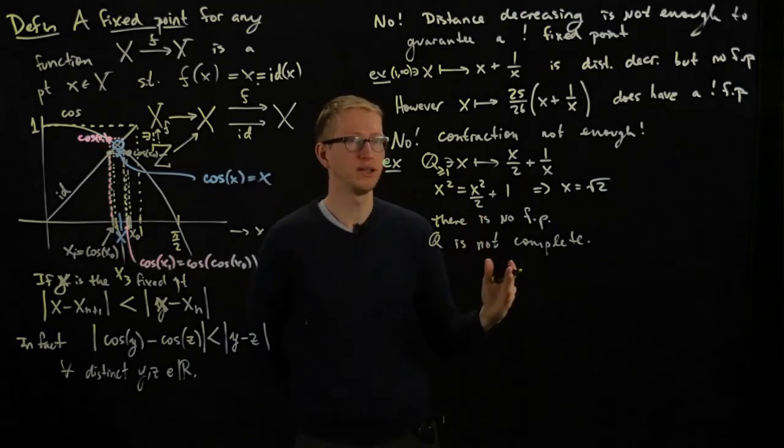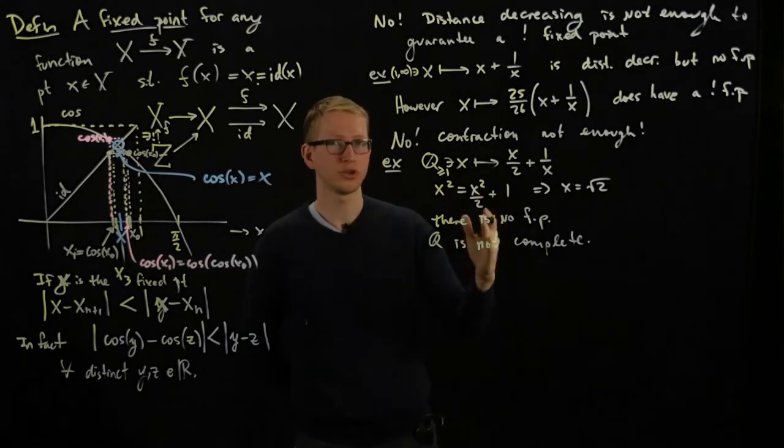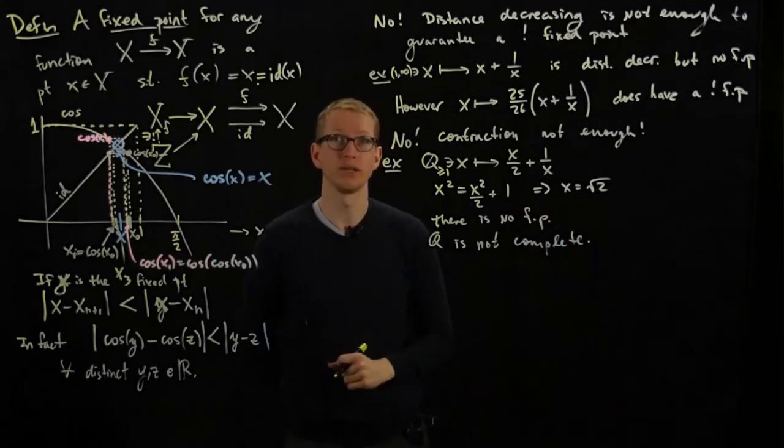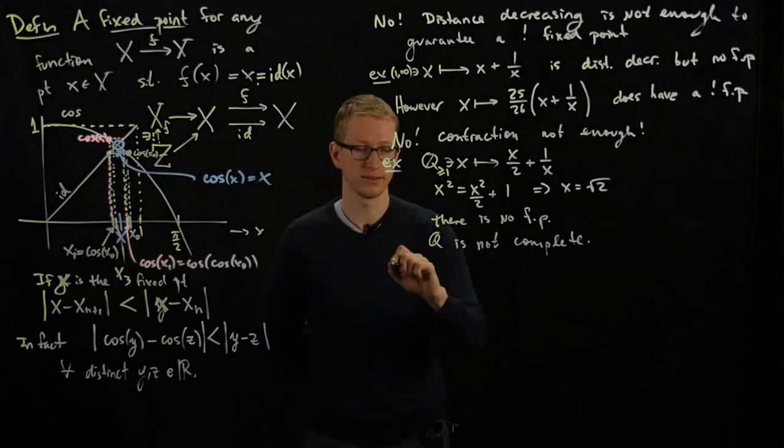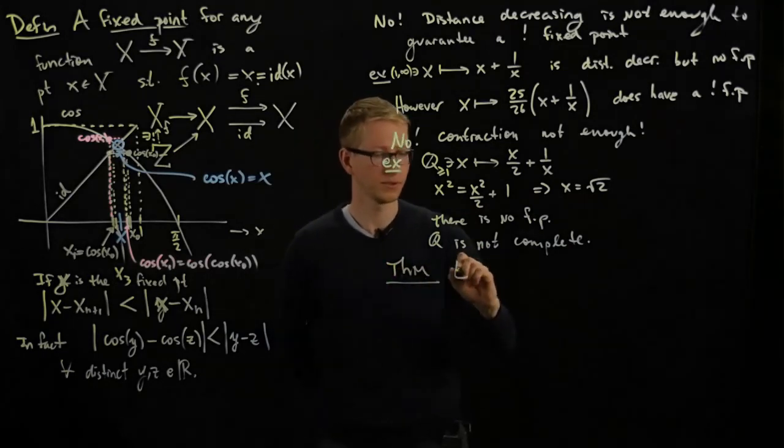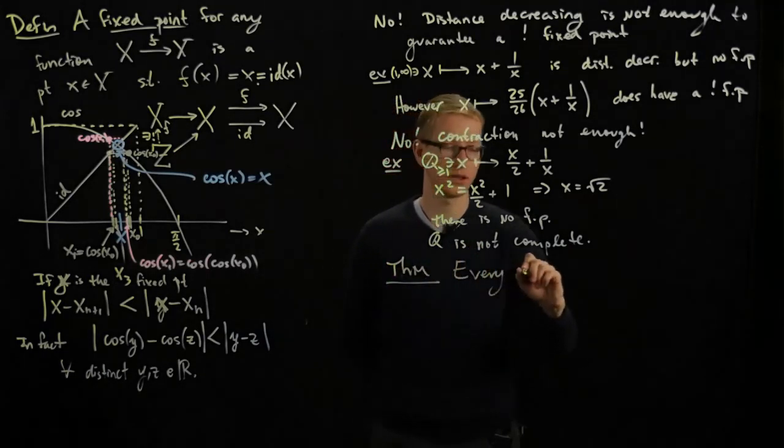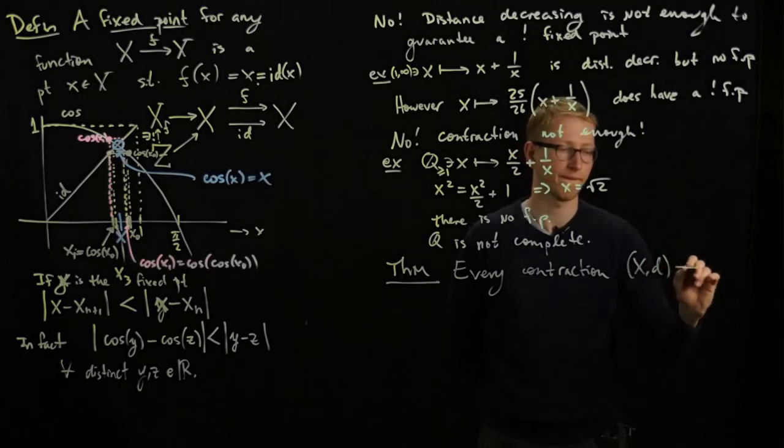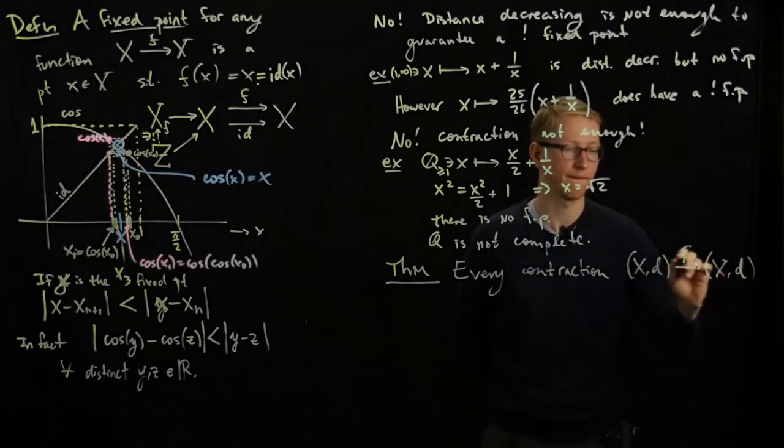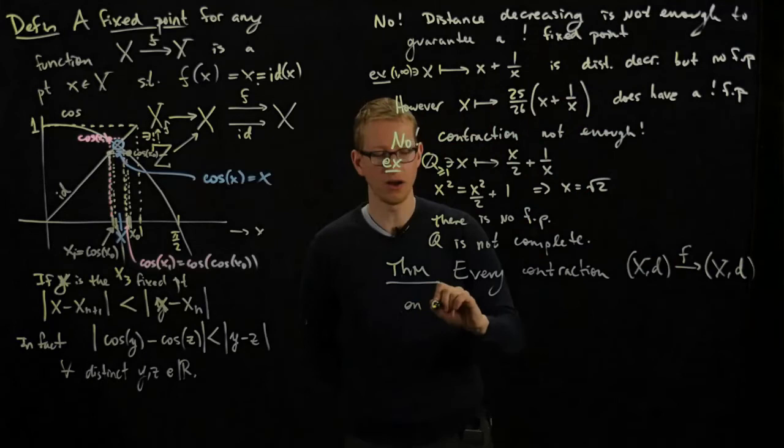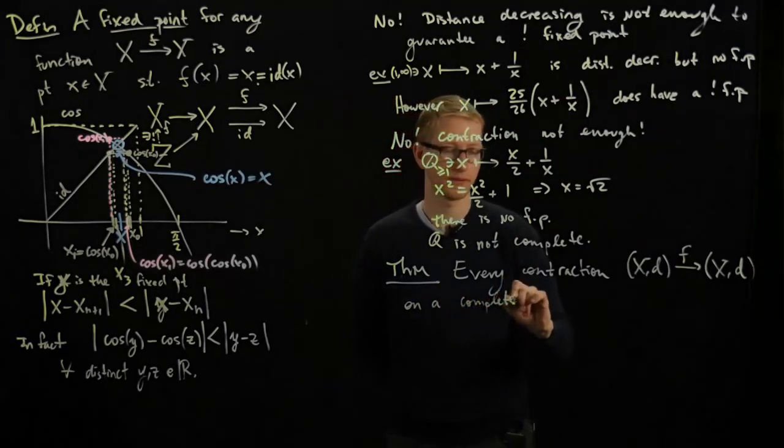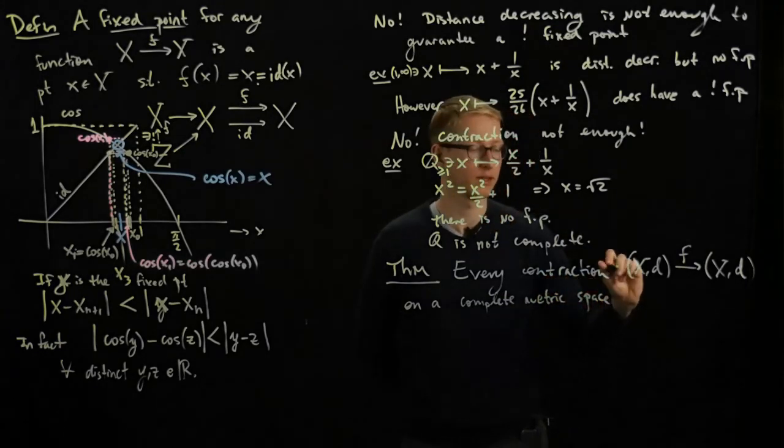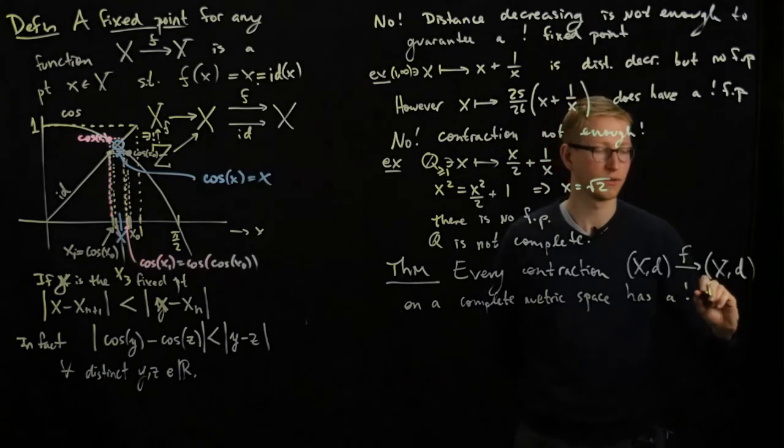Now let's try to make another one. Is it possible that every contraction on a complete metric space has a unique fixed point? And the answer to that question is yes. Every contraction on a complete metric space has a unique fixed point.